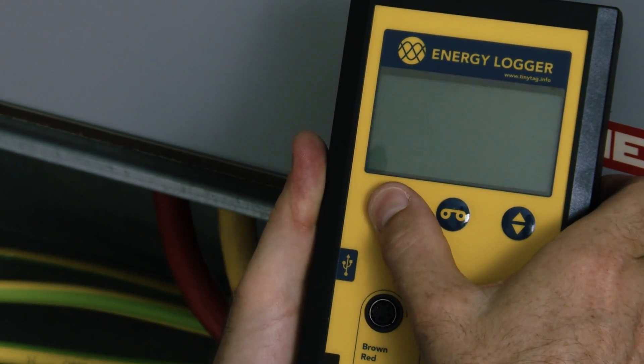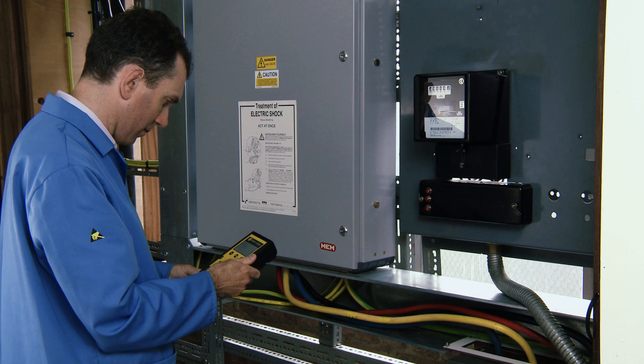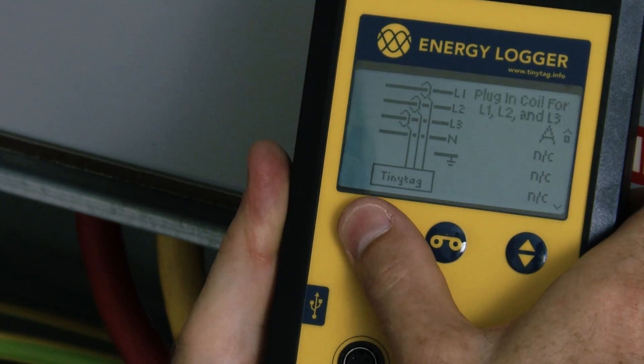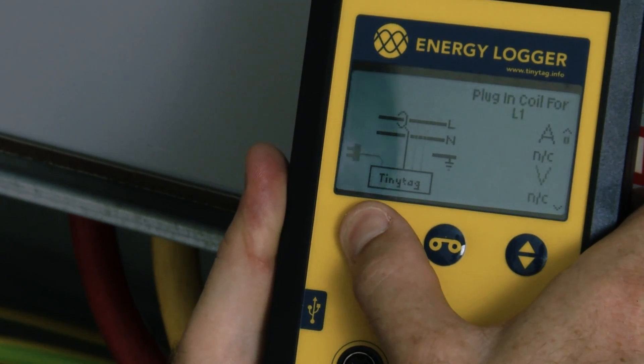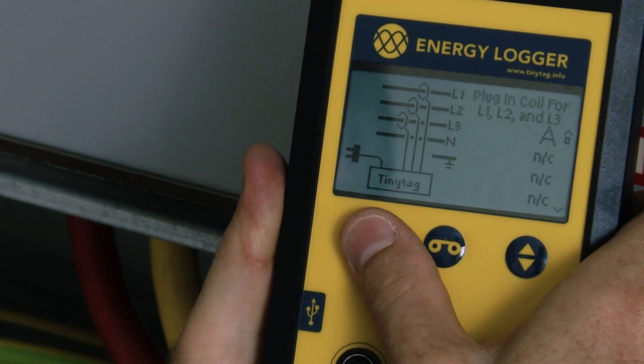To start using the logger, press the function button. This will display the different wiring configurations supported by the logger. Select the one required. In this example, three-phase with the voltage reference has been selected.